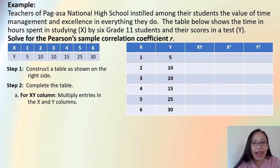For the XY column here, we multiply entries in the X and Y column. So, we have there, 1 times 5, you have there 5, 2 times 10, you have there 20, 3 times 10, we have there 30, 4 times 15, 60, 5 times 25, that's 125, and 6 times 30, that's 180.